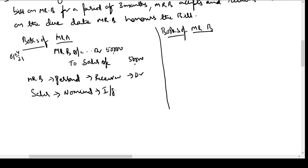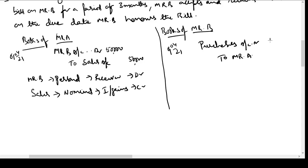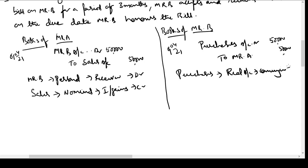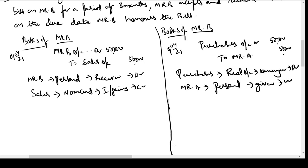In the books of Mr B, on 1st April 2021, he is receiving goods, so we pass: Purchases Account Debit, To Mr A Account, 50,000. The logic: Purchases treated as stock — real account, coming in, hence debit. Mr A is the supplier, a personal account, giving goods on credit. We owe money to him, so he is shown as a creditor in our books.